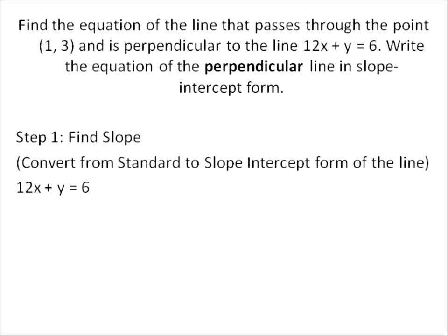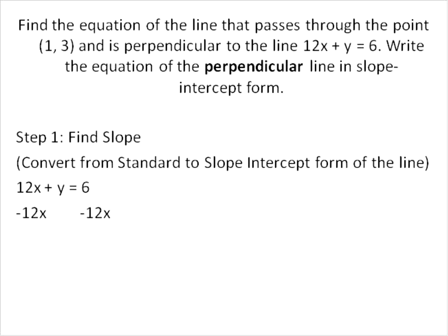The next two examples are going to be very similar except we're going to be doing lines that are perpendicular. Parallel lines have the same slope. Perpendicular lines have opposite inverted slopes. Otherwise we're going to follow exactly the same steps. Step one, we find the slope by converting from standard form into slope-intercept form — in other words, we get y isolated.